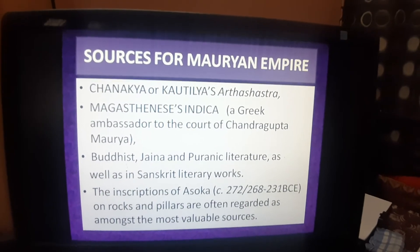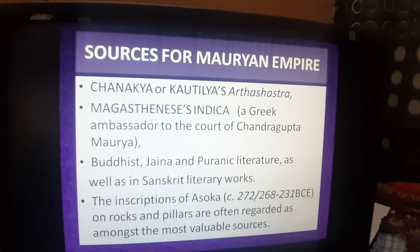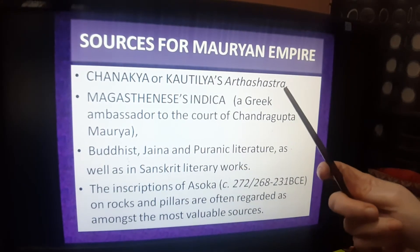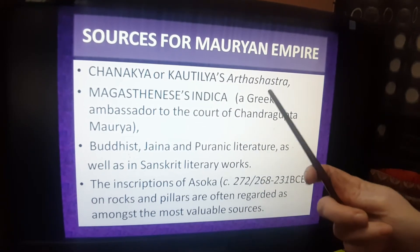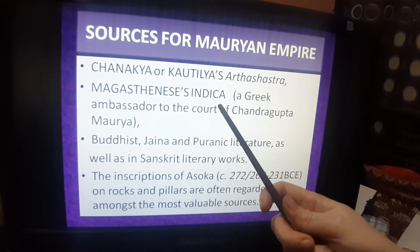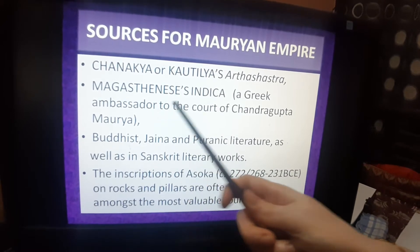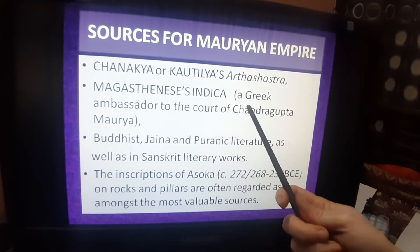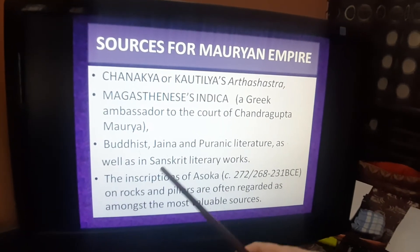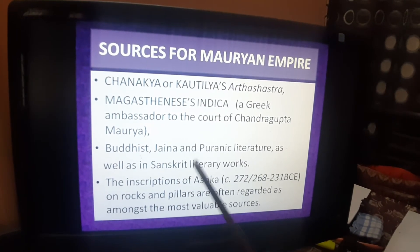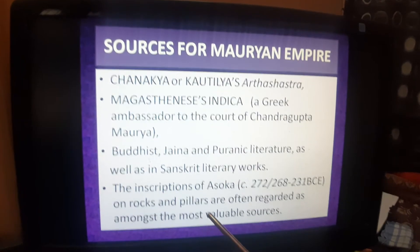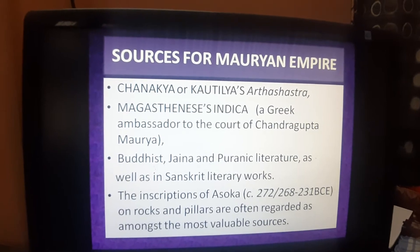What are the sources for the Maurya Empire? We have Chanakya, also known as Kautilya, and his book is the Arthashastra, which provides various information regarding the Maurya Empire's administration. We also have Megasthenes' Indica — Megasthenes was a Greek scholar and ambassador to the court of Chandragupta Maurya, and Indica was his book in which he wrote about Chandragupta Maurya's court. Next, we have Buddhist, Jain, and Puranic literature, as well as Sanskrit literary works. Above all, there are Ashoka's inscriptions on rocks and pillars, which are very valuable sources providing maximum information about Ashoka's reign.